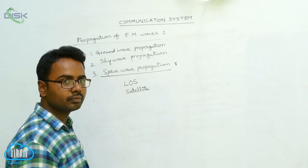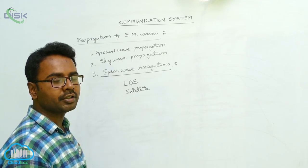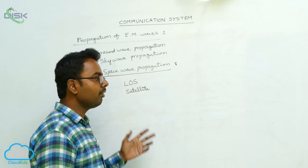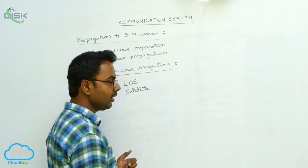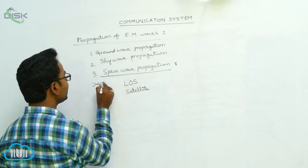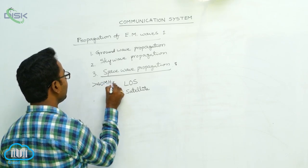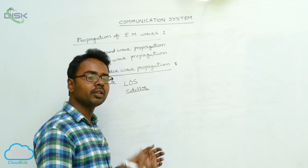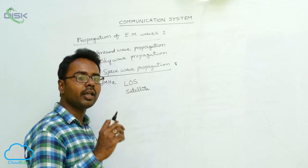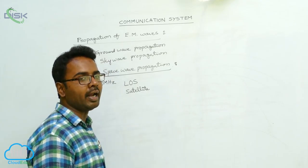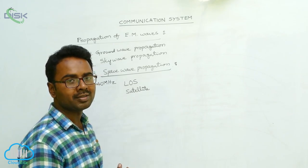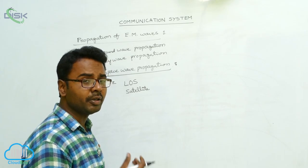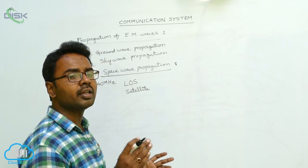Space wave propagation is applicable when the frequency of signals is greater than 40 megahertz. If frequency is high, then wavelength is low. If wavelength is low, then the size of the antenna is of the order of the wavelength, so the height of the transmitting and receiving antennas is small.